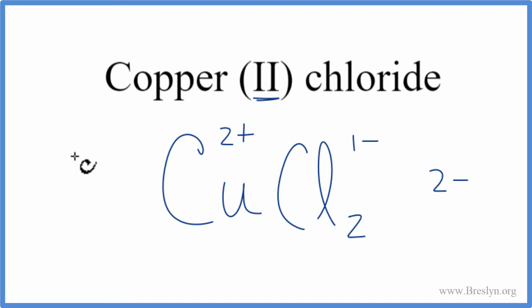One copper times the 2+. So 2+, 2-. They cancel out. The net charge is zero. This is the correct formula for copper(II) chloride.